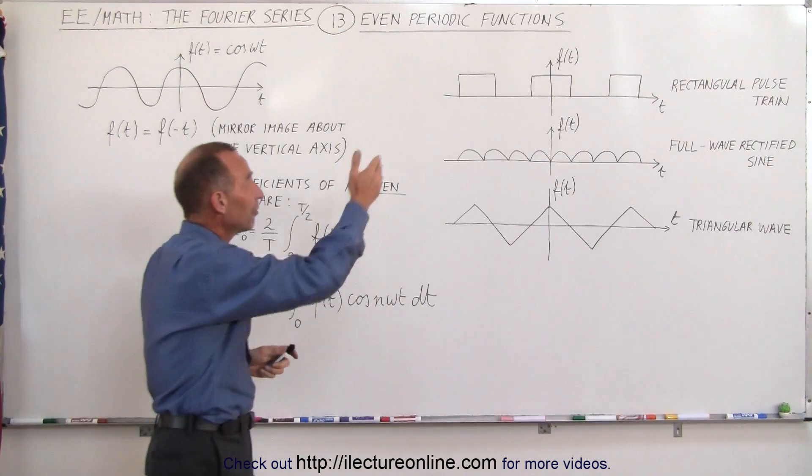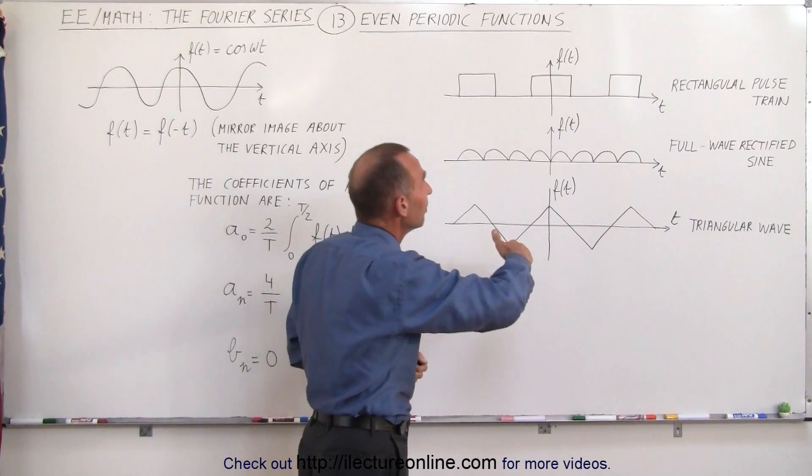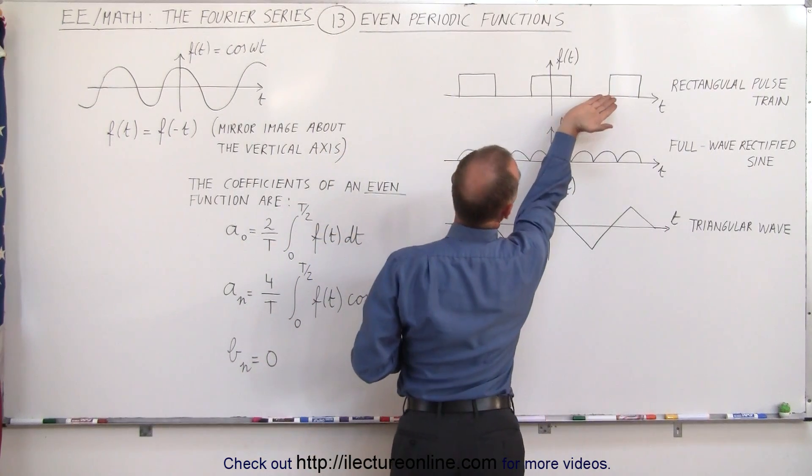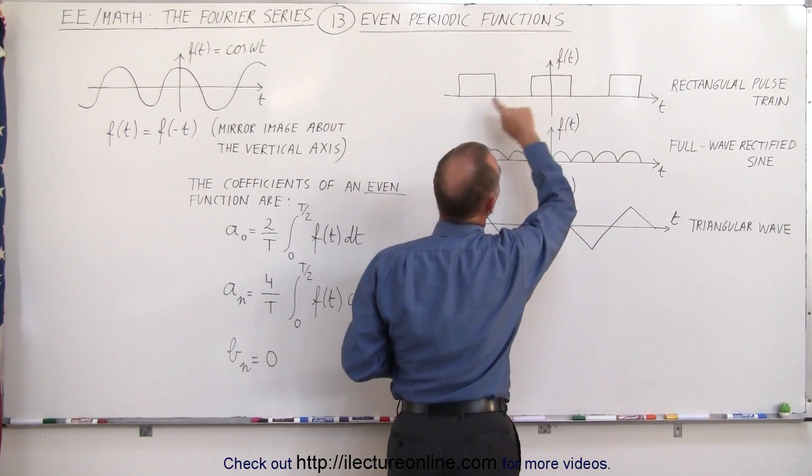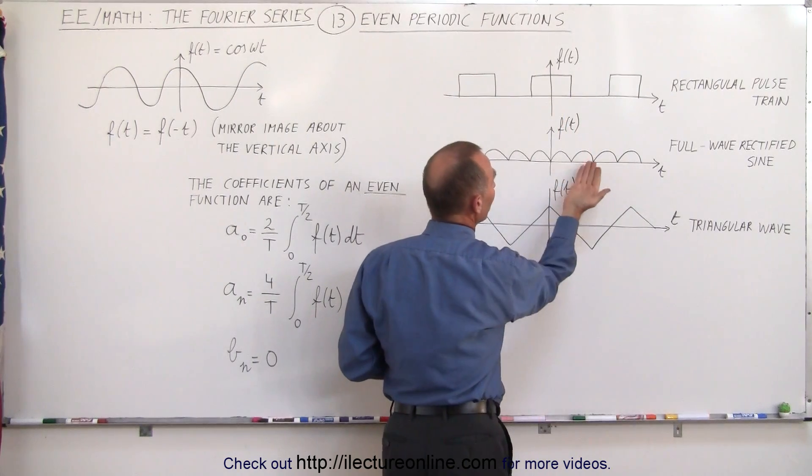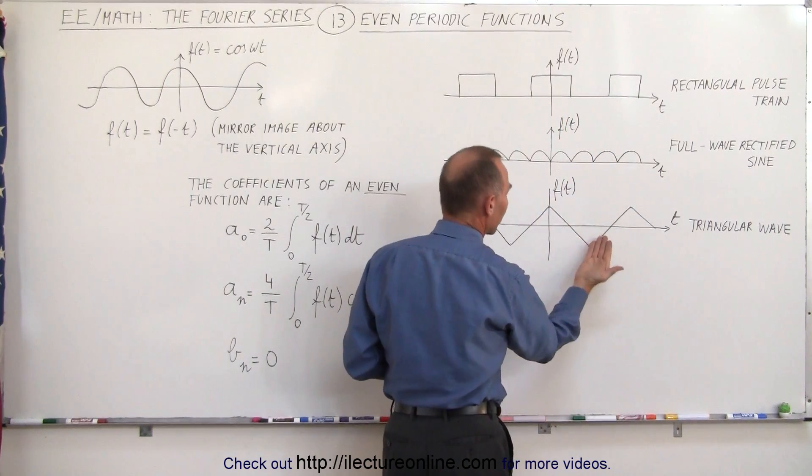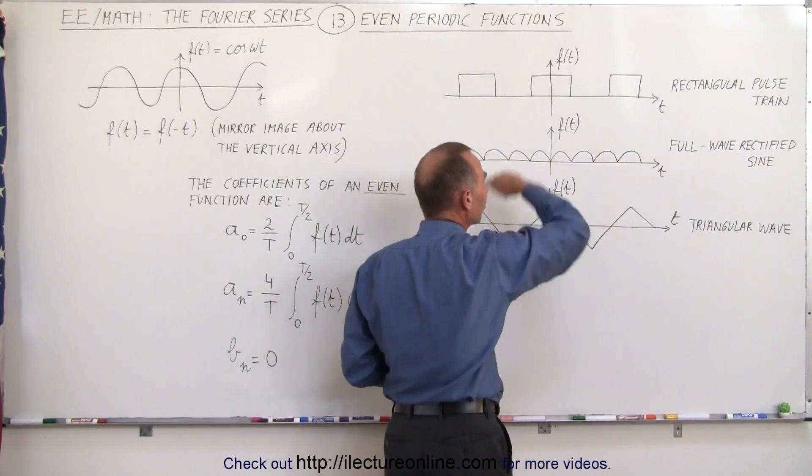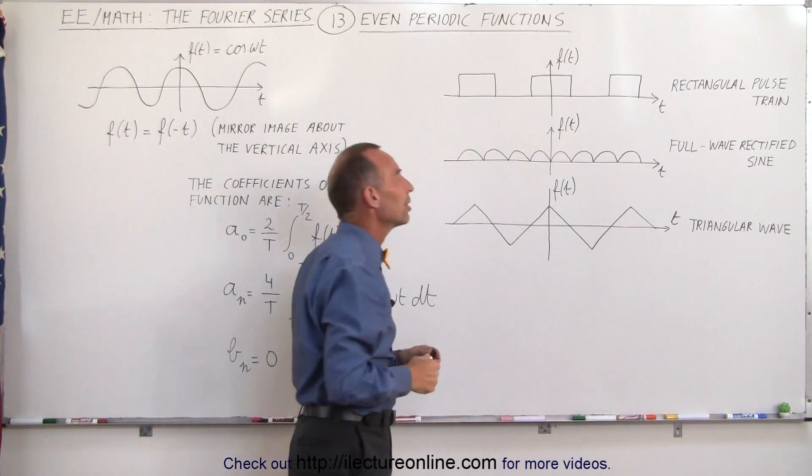And so we have some periodic functions here that can be considered even. Again, if you think about taking this and flipping it over, it looks exactly the same on both sides of the vertical axis. Same over here, we can flip this over. Same over here. So therefore, these are considered even periodic functions.